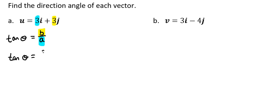So tangent of theta equals 3 over 3, which equals 1. Then we're going to multiply both sides by the inverse of tangent to find our theta measure.